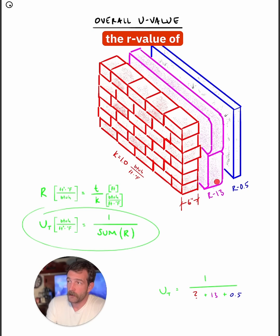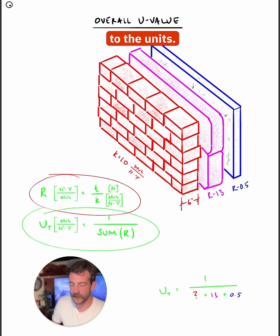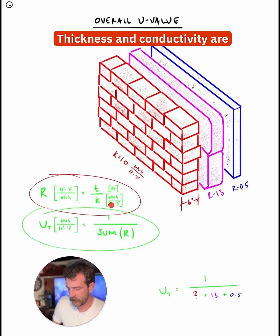Here, I already have the R-value of the insulation and drywall, but I don't have the R-value for my brick. So this is where we're going to use this equation, which is how to calculate R-value. R is equal to the thickness of your material divided by the conductivity of your material. And pay attention to the units. Thickness and conductivity are in terms of feet.